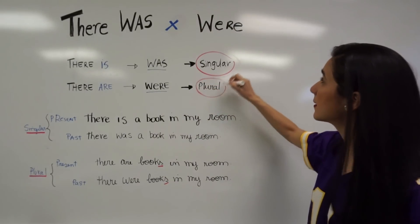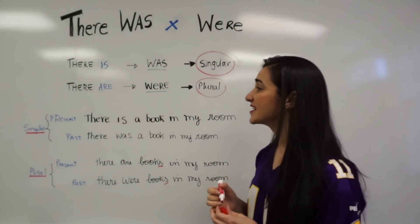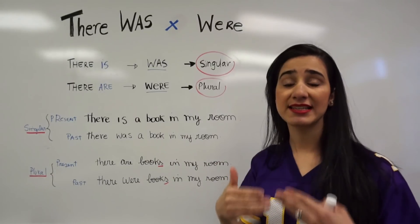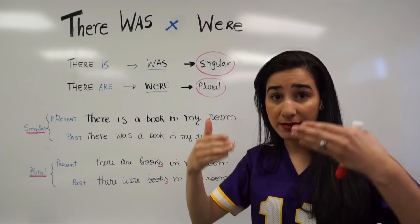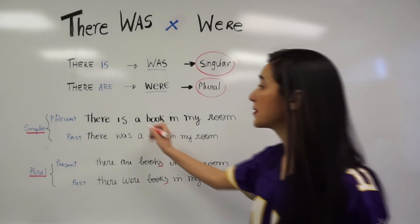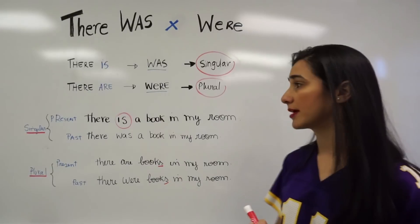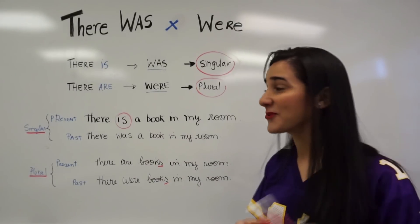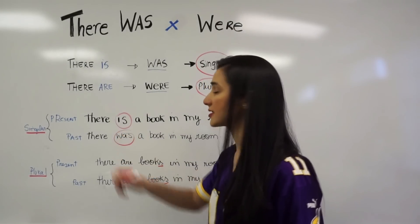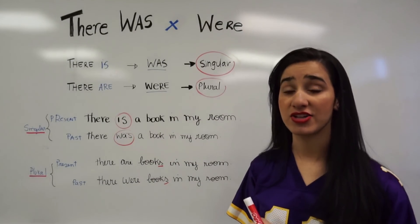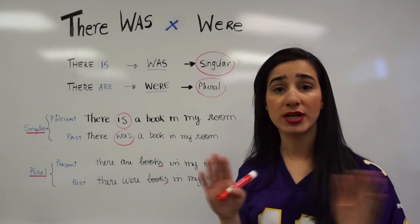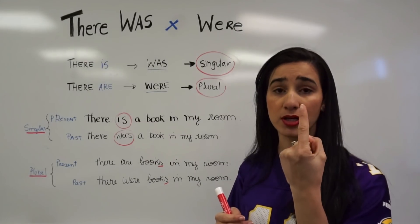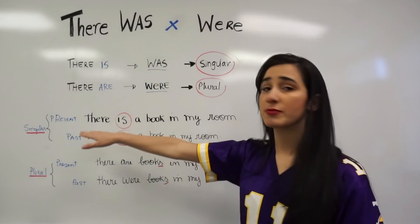Let me show you some examples. 'There is a book in my room' — I'm saying that a book exists in my room, and that's present. When I want to say that a book existed in my room in the past, I say 'there was a book in my room.' I use 'there was' because I'm talking about only one book — it's singular.